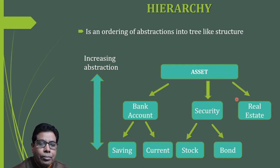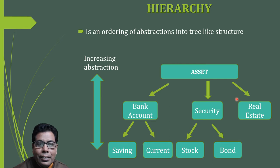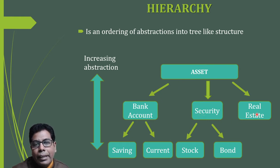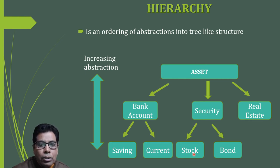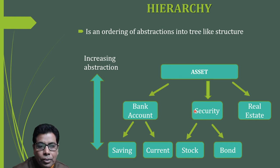The next concept is hierarchy — the ordering of abstractions into a tree-like structure. For example, a person has different assets, which can be broken down into bank account, security, and D&D. Bank accounts can be further divided into savings and current. In terms of security, we can have stocks or different bonds. As we go down, we increase the abstraction. This is achieved with the help of inheritance in object-oriented programming.